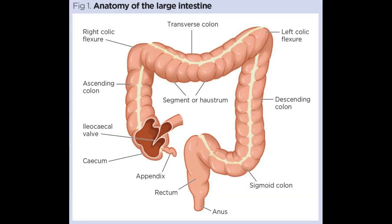The large intestine stretches from the ileum to the anus. The colon is connected to the rectum and then the anus. The large intestine is much broader than the small intestine and takes a straighter path through the abdomen. Its purpose is to absorb water and salts from undigested material and get rid of any waste products left over. Here is the structure of the large intestine.